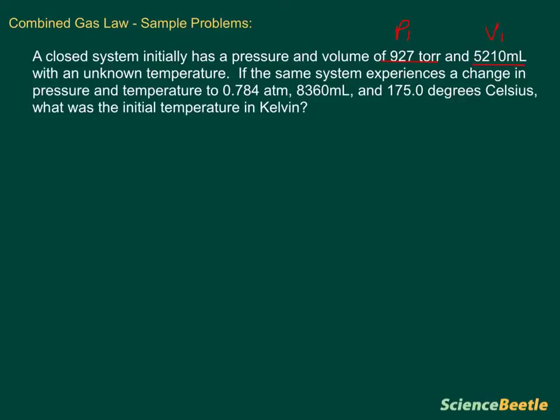Here's our V1, and we have an unknown temperature. This is what we're looking for - this is our T1. We also know that we're going to have a change in pressure, here's the second pressure, here's our P2. We have a volume change here, V2, and we've got our new temperature here, T2.